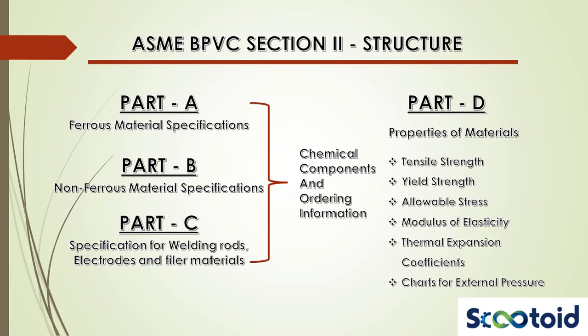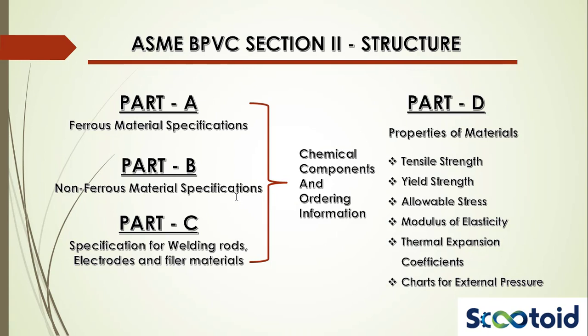Parts A, B and C cover the specifications of materials like their chemical compositions and ordering information. Part D covers their physical properties. Parts A, B and C generally help in material selection and procurement while Part D is most useful in the design process.